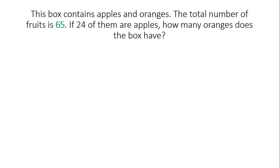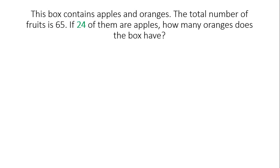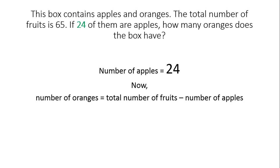Answer. We know that the total number of fruits in the box equals 65. This means number of apples plus number of oranges equals 65. We also know that the number of apples in the box equals 24. Now, number of oranges equals total number of fruits minus number of apples.